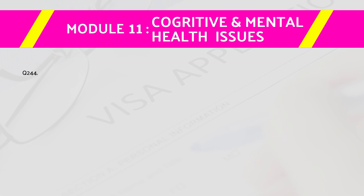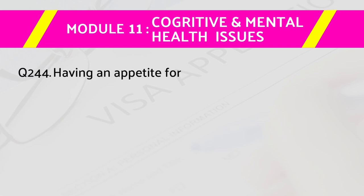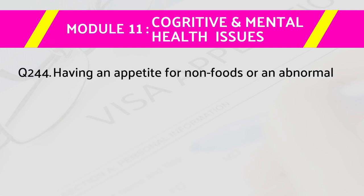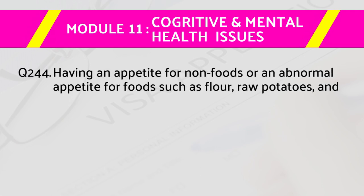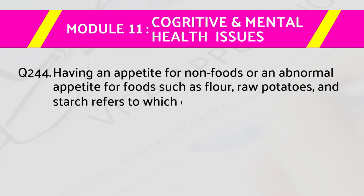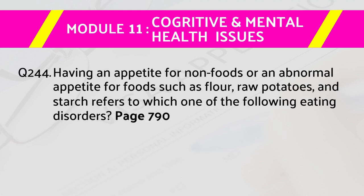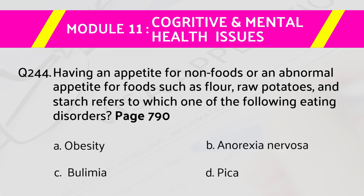Question number 244: Having an appetite for non-food items, or an abnormal appetite for foods such as flour, raw potatoes, and starch, refers to which one of the following eating disorders — page number 790. Answers are: a) obesity, b) anorexia nervosa, c) bulimia, d) pica. The right answer is d) pica.